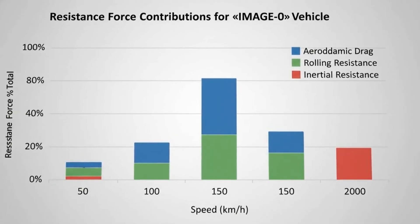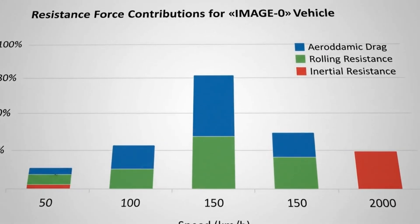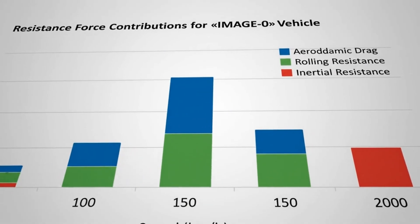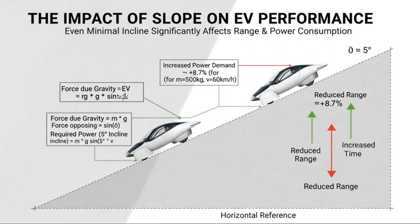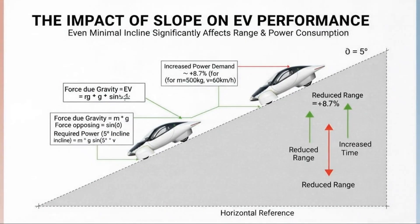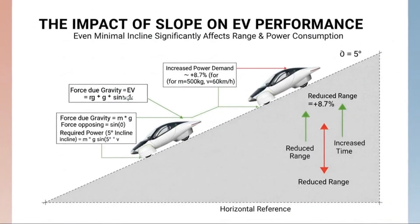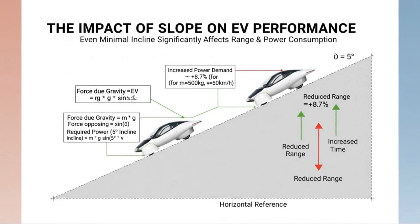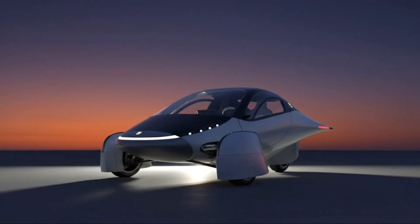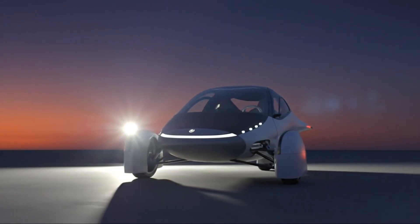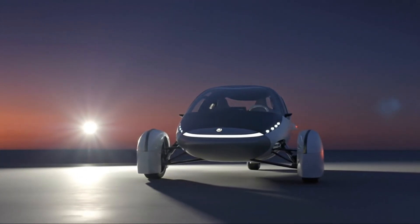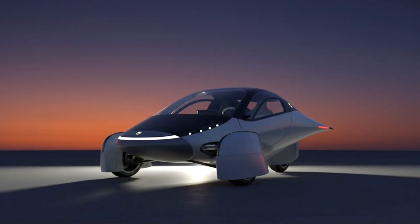This weight reduction comes from an advanced composite body made using resin-infused sandwich core structures combining carbon fiber and fiberglass. The result is a shell that's lighter than aluminum, yet exceptionally strong. Instead of hundreds of stamped metal panels welded together, the vehicle relies on a small number of large structural components. This dramatically reduces part count, fasteners, and unnecessary mass.